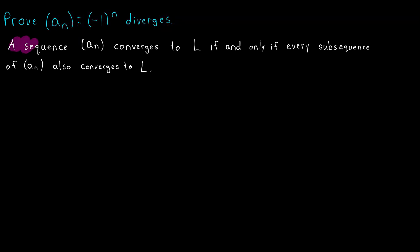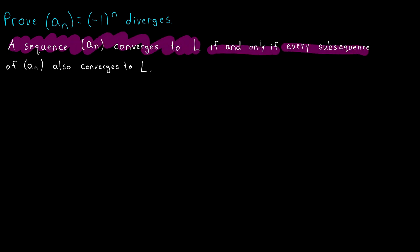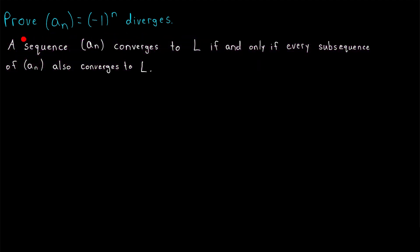We've proven that a sequence converges to a real number if and only if every subsequence also converges to that same real number. I'll leave a link in the description to the lesson where we prove this. It's a really powerful result, and it gives us a very easy way to prove that this sequence diverges.